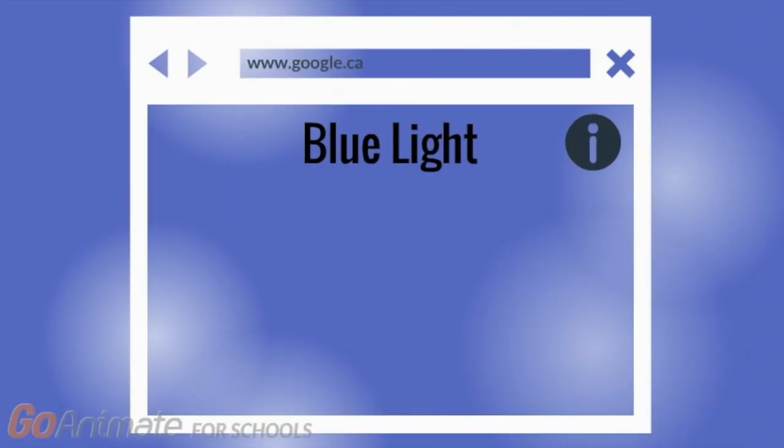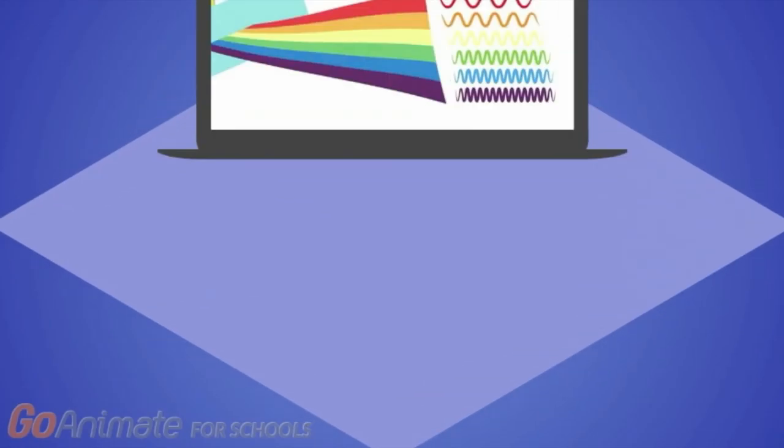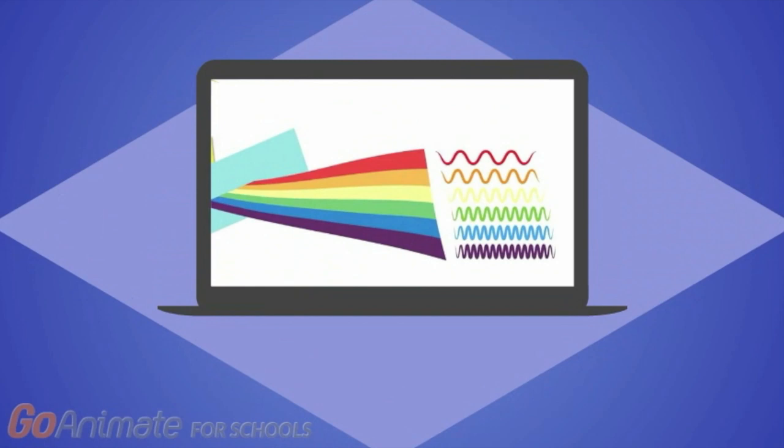Blue light is a visible light which is a part of the visible spectrum that can be seen by the human eye. Of all the colors, blue light has a very short wavelength, which means it produces higher amounts of energy.